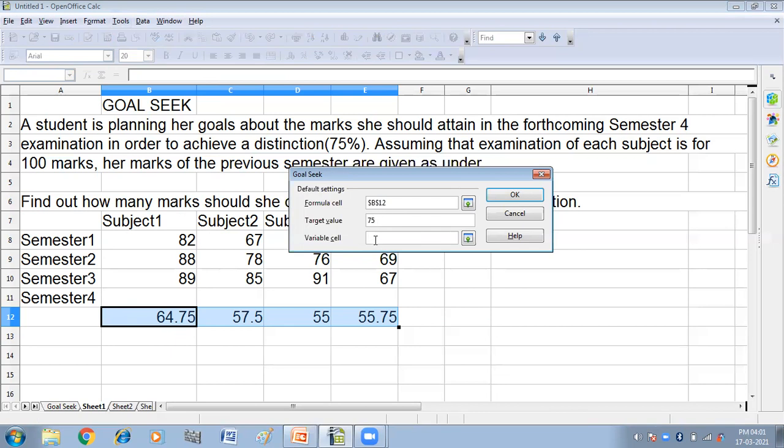And variable cell. Variable cell is the cell in which we want to get the number. It is the cell that we want to enter the number, so that we get the 75%.